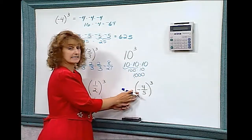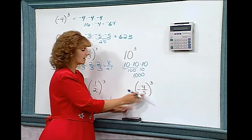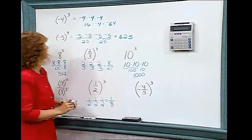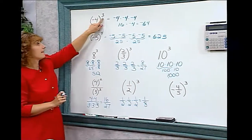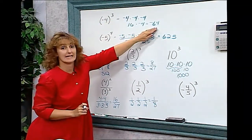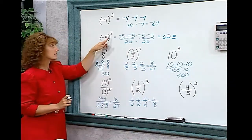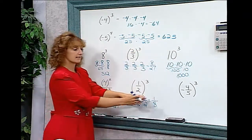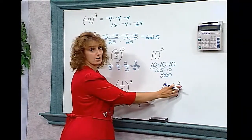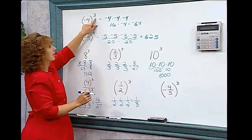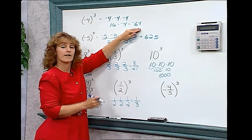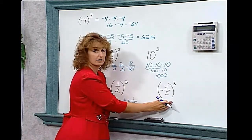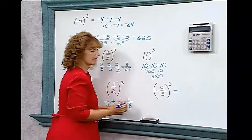Our last example is negative four-fifths — a fraction inside parentheses, but the base is negative. Let's think back to what we learned in our first two examples. If we have a negative base and the exponent is odd, we get a negative answer. If we have a negative base and the exponent is even, we get a positive answer. Here we have a negative base with an odd exponent, so we should get a negative answer — this is a good way to check our work. We also have a fraction entirely in parentheses, so we know we have to take that entire fraction.